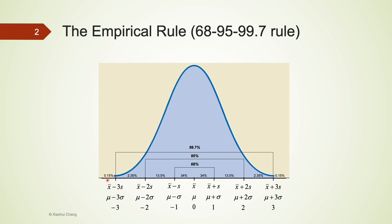Beyond those three numbers, we can derive others. Since 68 percent are within plus or minus one z-score, 34 percent of observations fall between zero and one standard deviation. Similarly, 2.35 percent of observations fall between two and three standard deviations above the mean, and about 0.15 percent are more than three standard deviations above the mean.